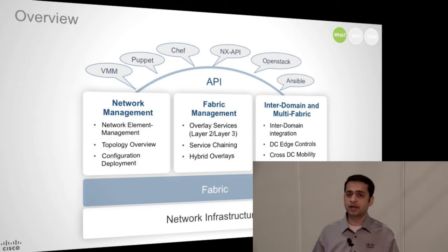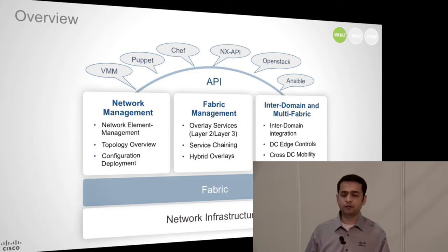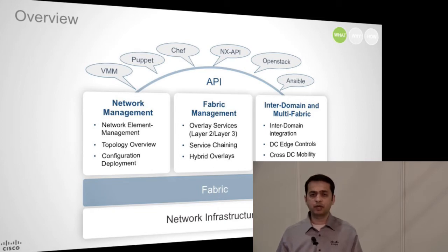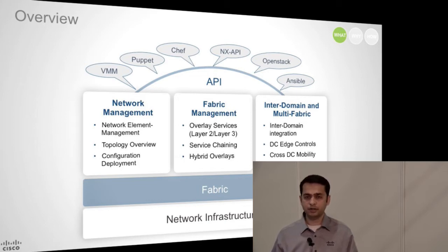Because none of us like to live on an island, you need to support multi-fabric. It needs to support data center interconnect technologies and provide you a rich feature set to be doing that. And then we wrap it all around with APIs, which are pervasively available to you from the switches, from the controllers, from orchestration layers, for you to plug into your infrastructure and make it as automated as possible.